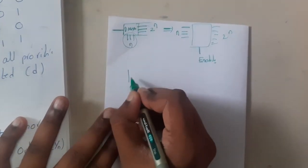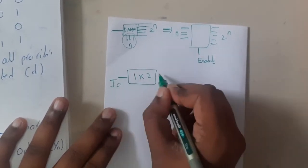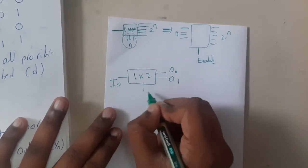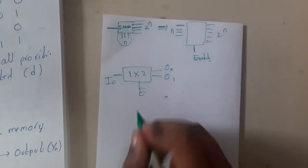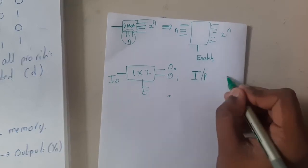I'll be just giving you some small example. There is never a question from this topic like decoder and encoder, so just for our conceptual understanding I'll be giving you an example. If this is our decoder, what is your truth table? If you are having an input and output.